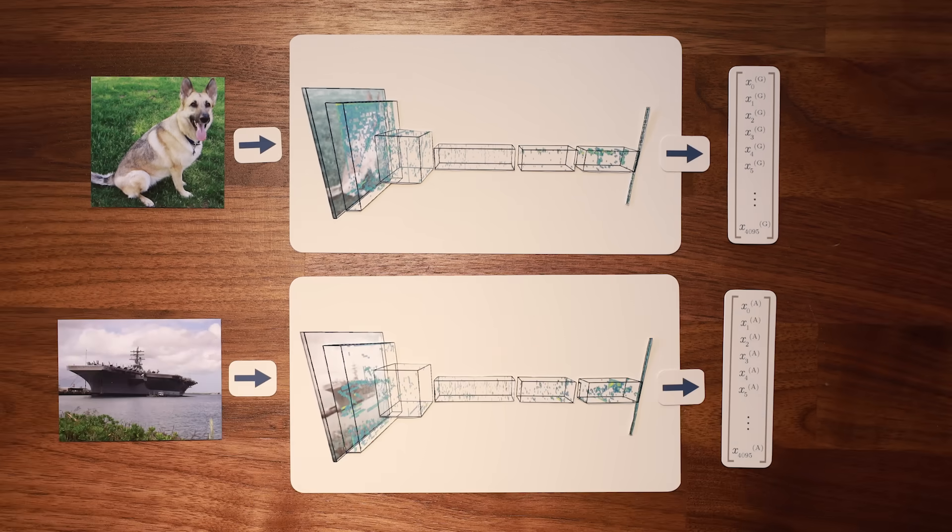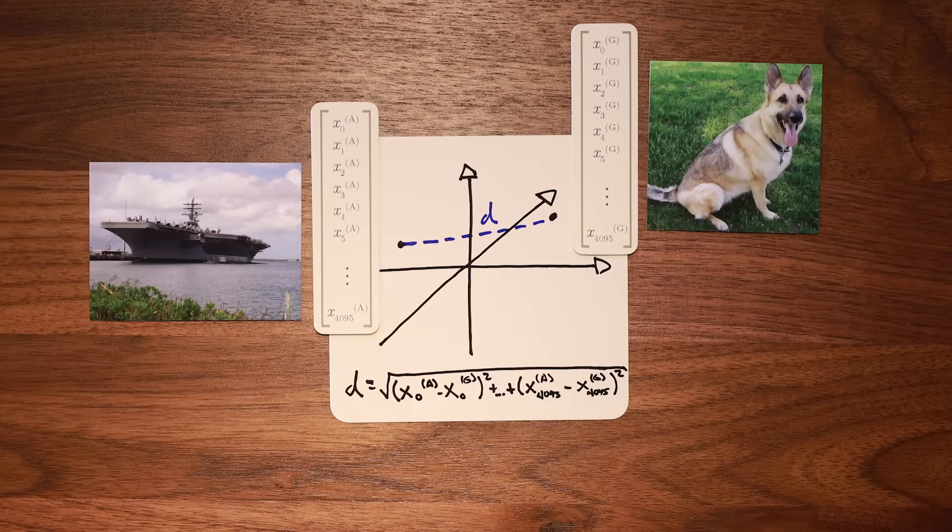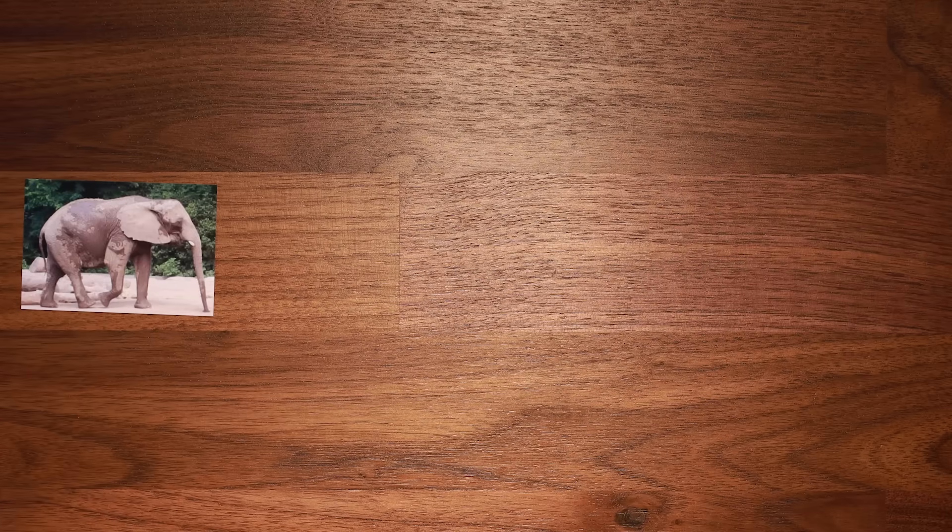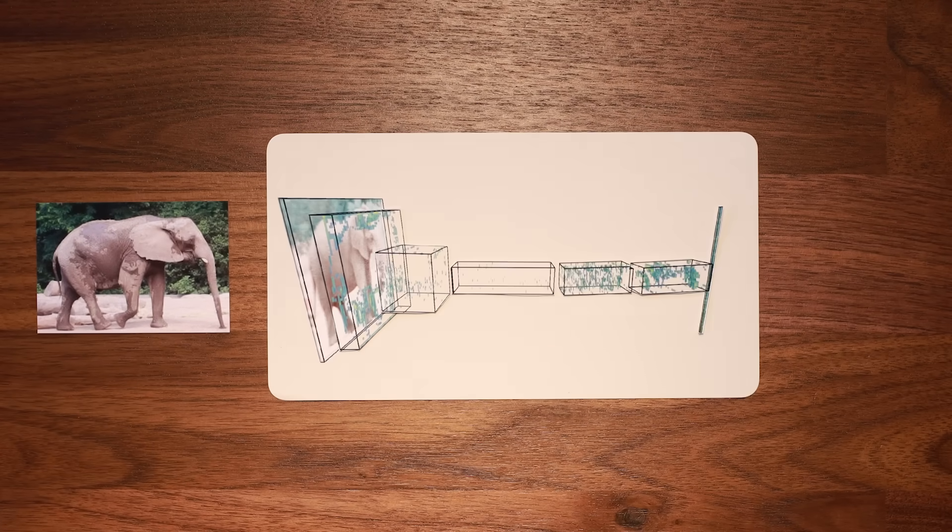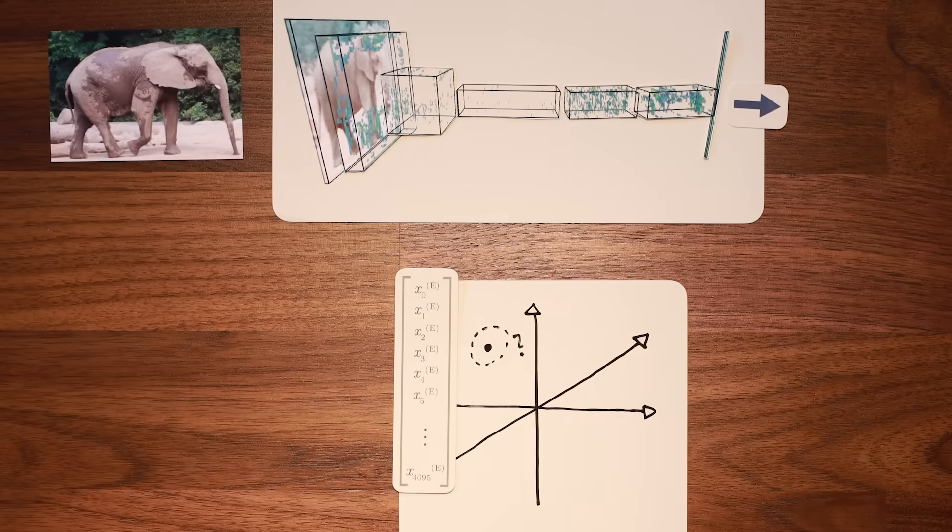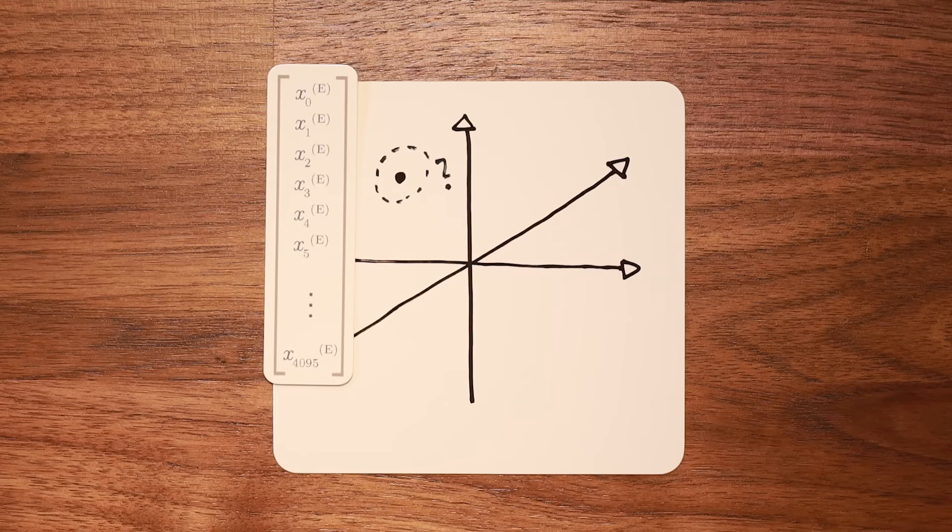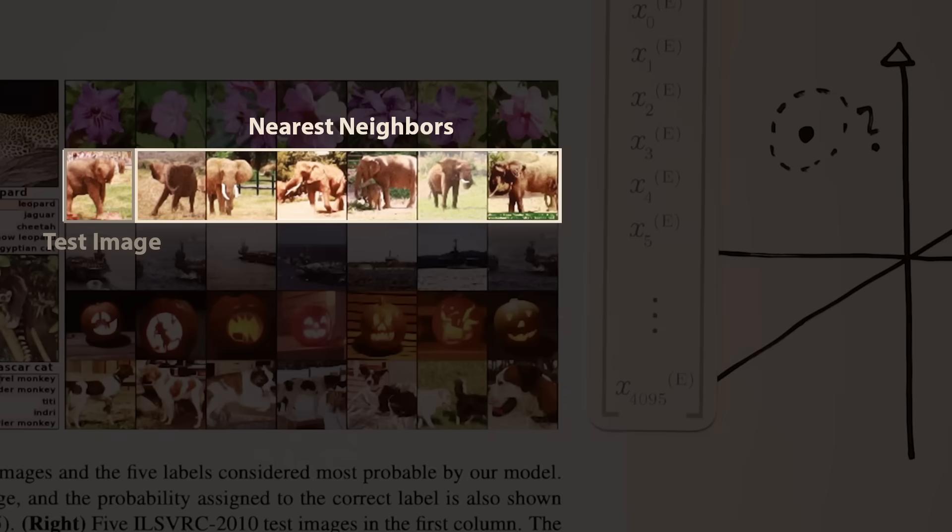Just as we can measure the distance between two points in 2D space, we can also measure the distance between points or images in this high-dimensional space. Hinton's team ran a simple experiment, where they took a test image in the ImageNet dataset, computed its corresponding vector, and then searched for the other images in the ImageNet dataset that were closest, or the nearest neighbors, to the test image in this high-dimensional space. Remarkably, the nearest neighbor images showed highly similar concepts to the test images. In Figure 4 from the AlexNet paper, we see an example where an elephant test image yields nearest neighbors that are all elephants.